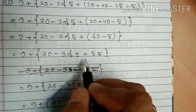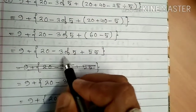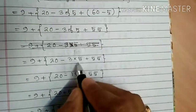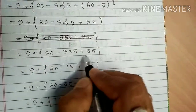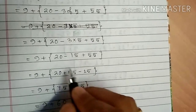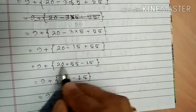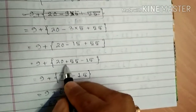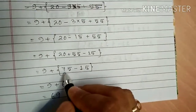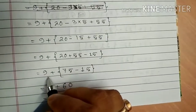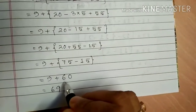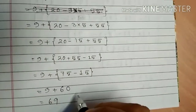Now, 'of' means multiply. So we have 20 minus 3 into 5 plus 55. 3 into 5 gives 15. Now 20 plus 55 together, since they are positive, gives 75. So we have 9 plus 75 minus 15. 75 minus 15 gives 60, and 60 plus 9 gives 69. That is the required result.